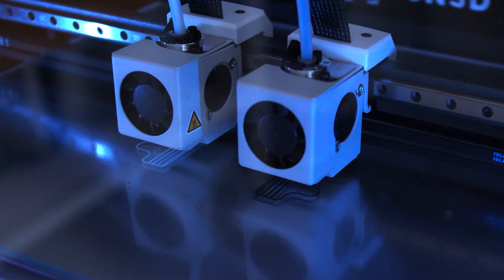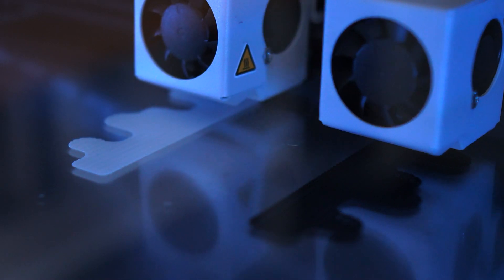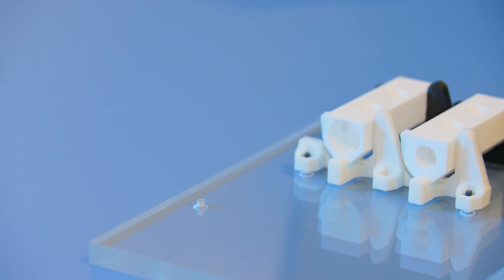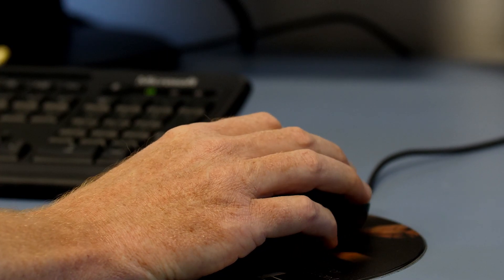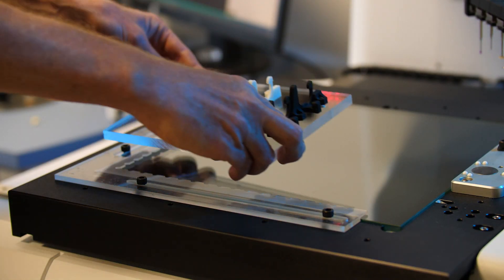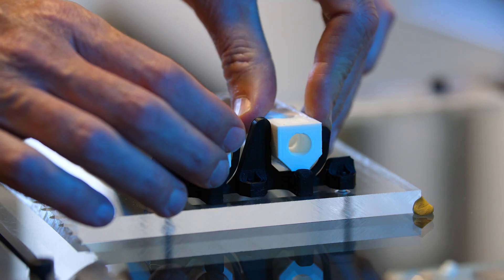We are using IDEX technology because it can double our production, so we obtain parts quicker. It's interesting to have a big volume to produce. And also the rigorous calibration procedure - with that, it's possible to have accurate parts. Also, what we find interesting is the end spool detector. It avoids losing our work during printing.